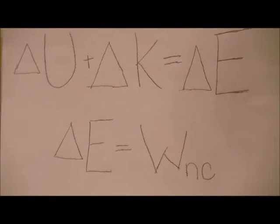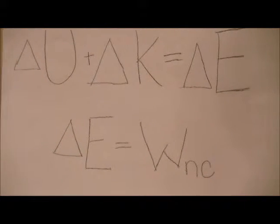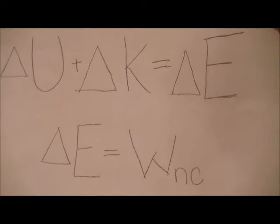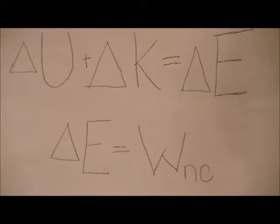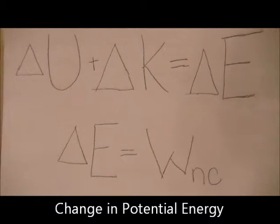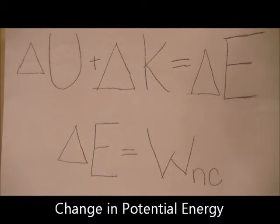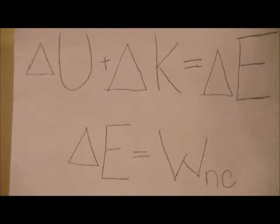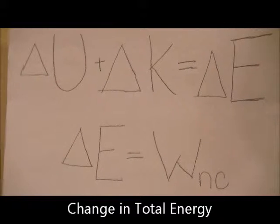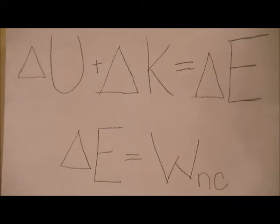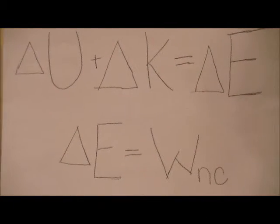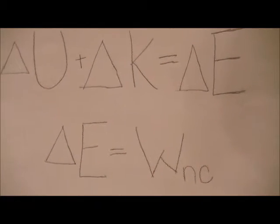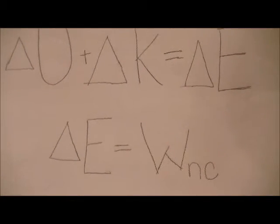But what is the total change in energy now that the ball is in the ground? Using the following equation, we see that the total potential energy plus the total kinetic energy equals the total energy overall, and the total energy is equal to the work that is not conserved. To solve for total energy, first we must solve for the potential and kinetic energy of the ball.